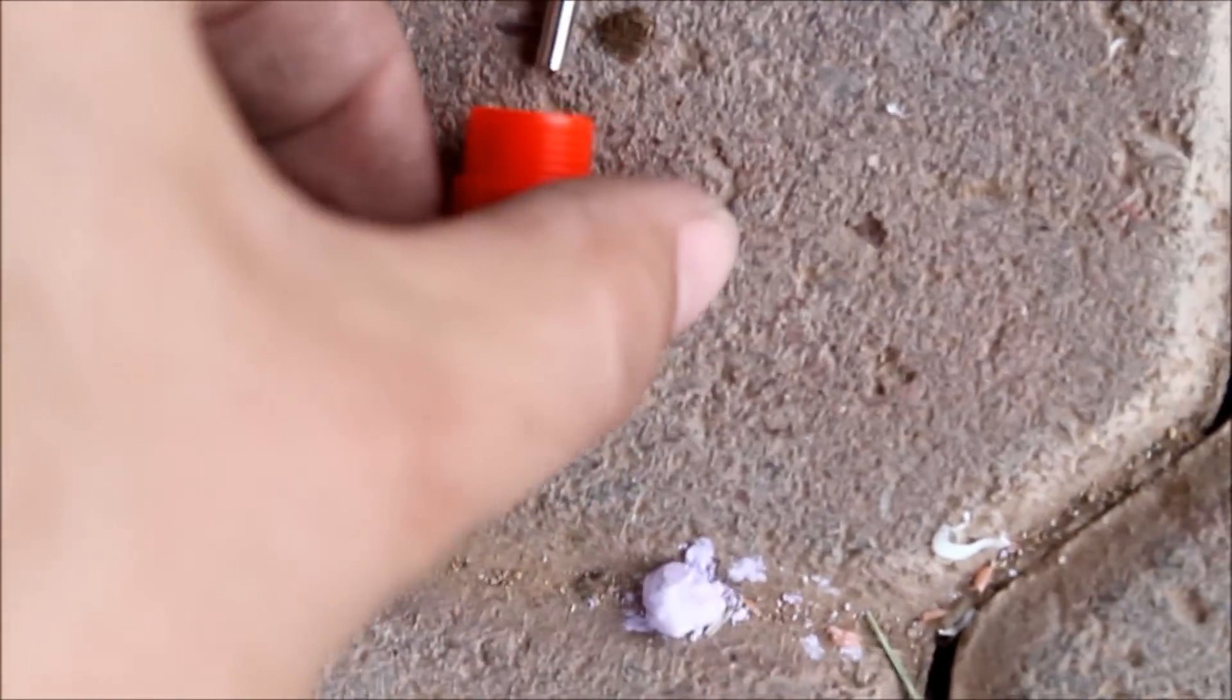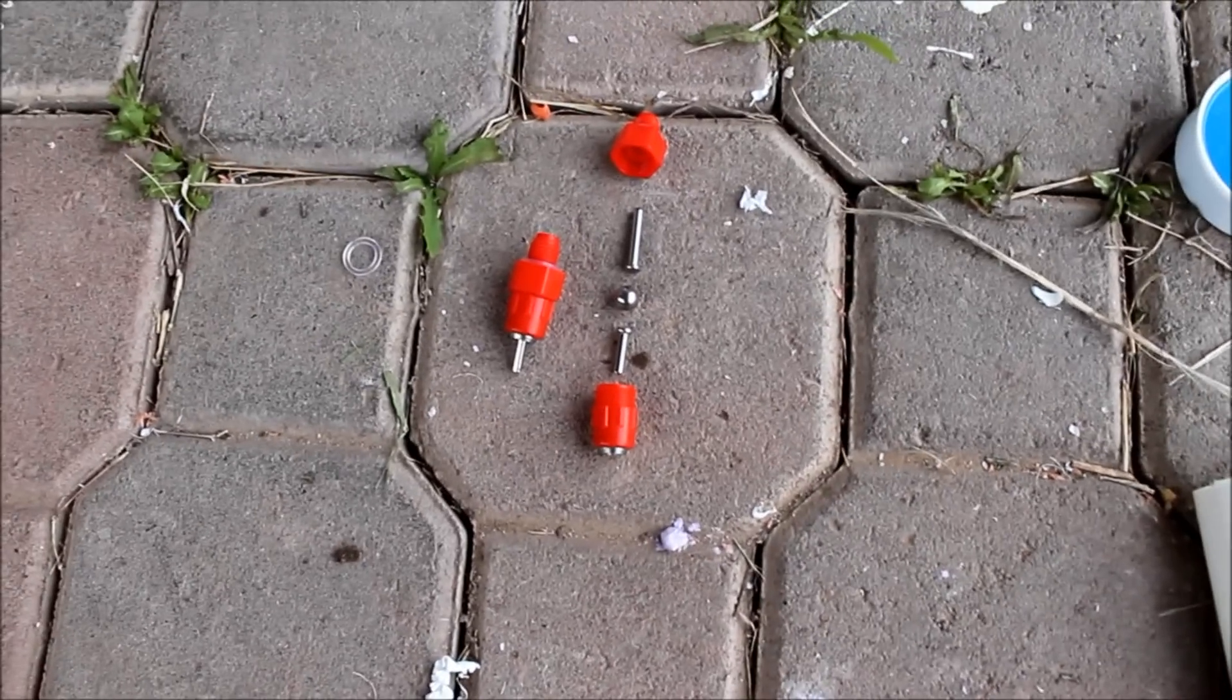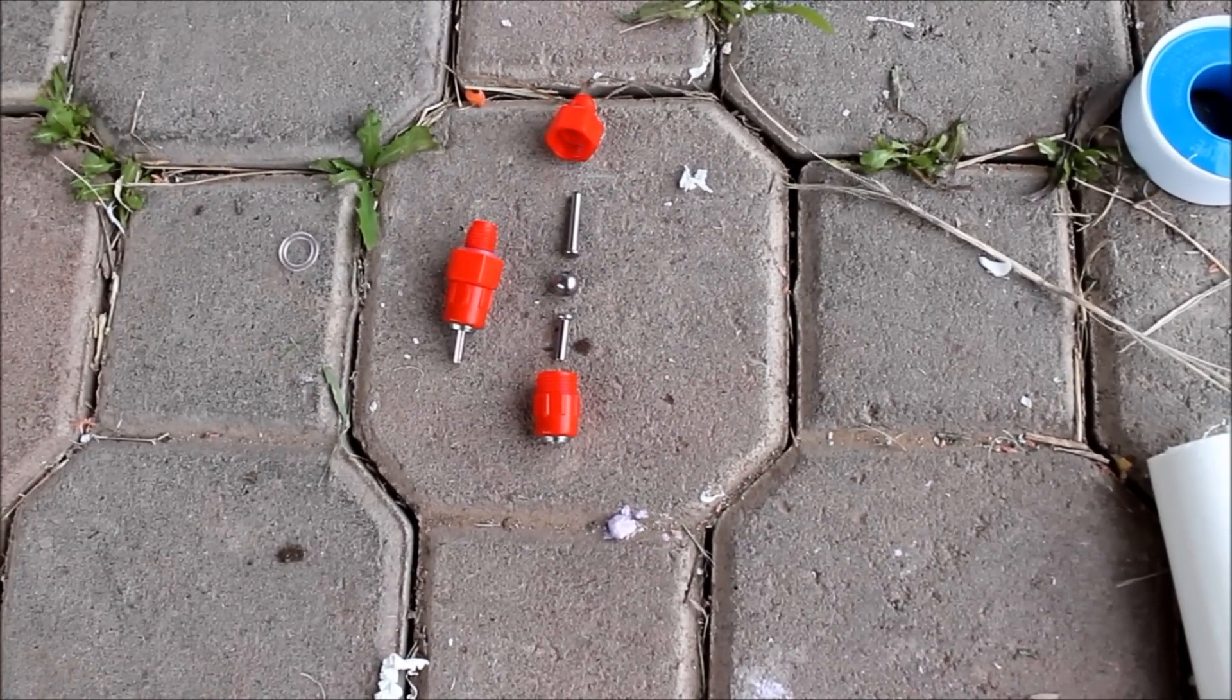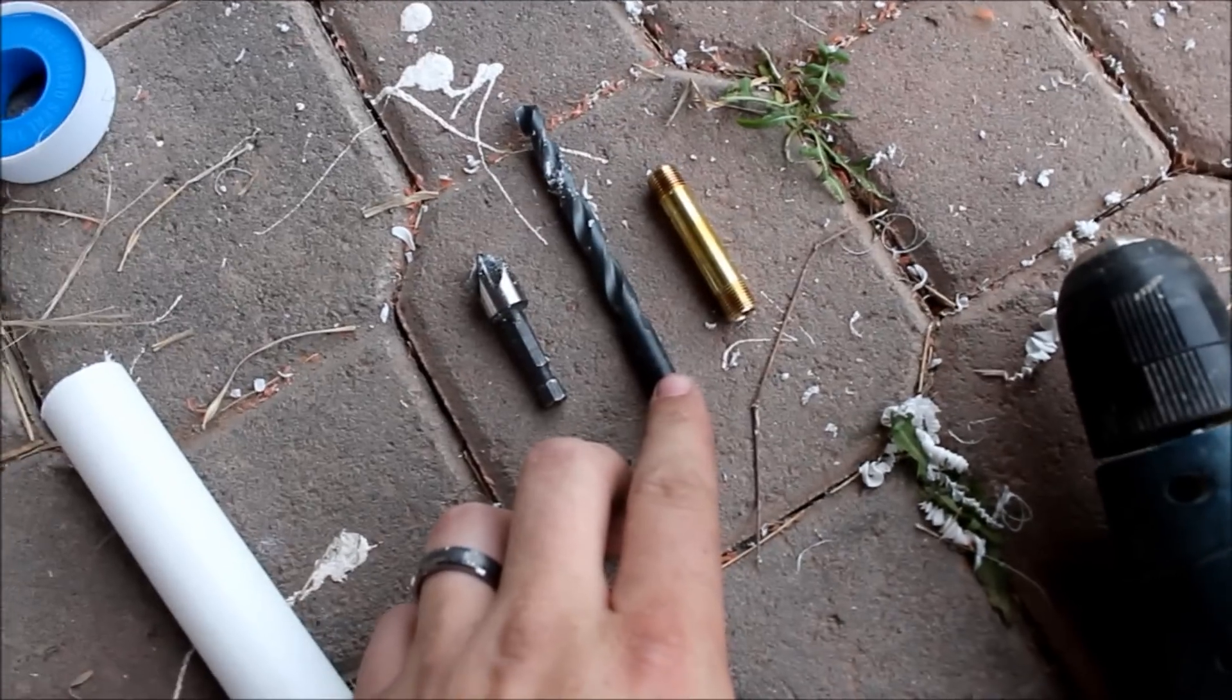So when they peck at it, it lets some water through. Now when you're installing these things, you either need a 1/8 inch MIP thread tap, or what I did is I use a 5/16 drill bit, a countersink bit, and a 1/8 MIP brass nipple.